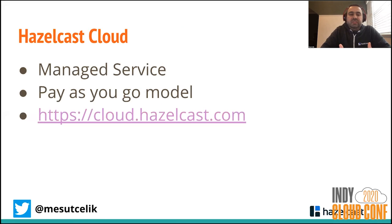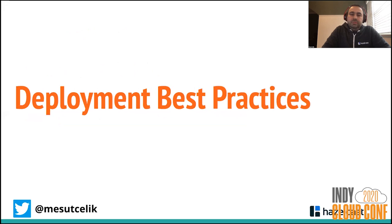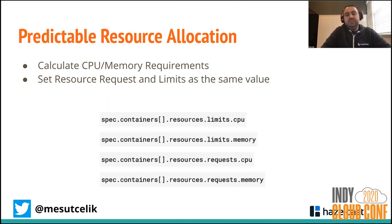The third option is: if you don't want to deploy Hazelcast yourself, you can use Hazelcast Cloud. So far we've talked about distributed caching, using it in Kubernetes, and how to deploy it. Now I'll go through some deployment best practices for Kubernetes that you can apply to your own architecture.